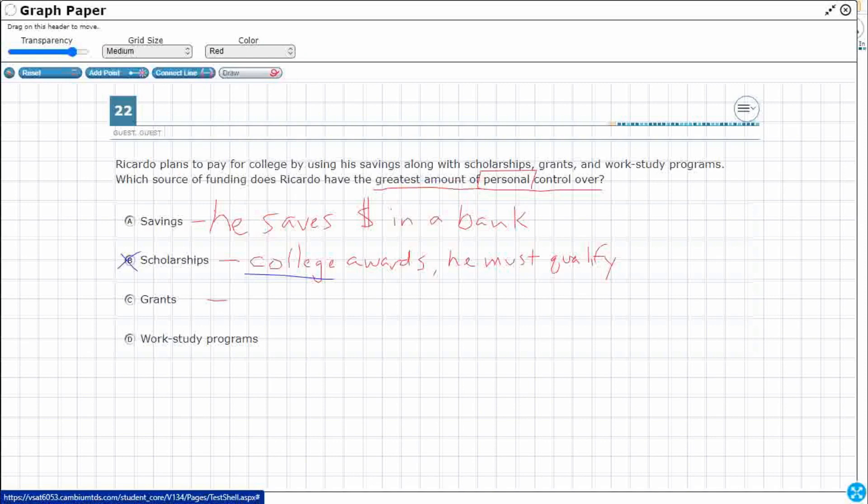Now the grant, this is from the government. Most likely it's going to be a Pell grant, which means it's going to be the federal government, but sometimes you might get some state grants. So your government awards this and once again, he must qualify.